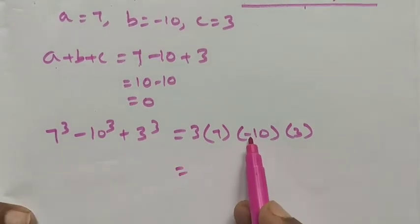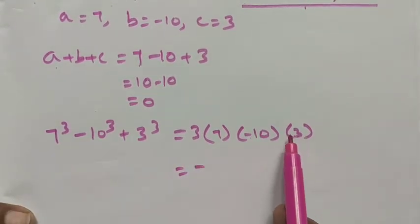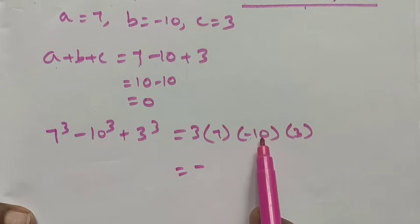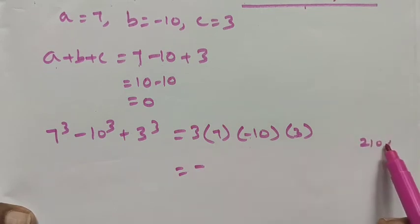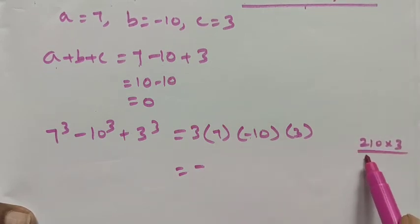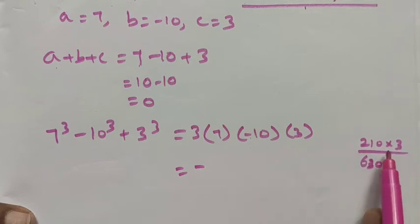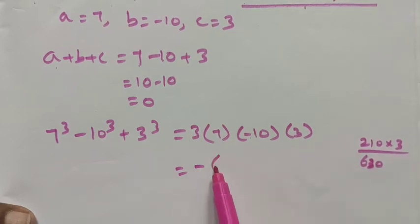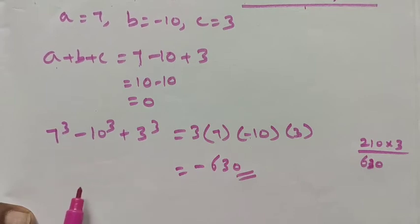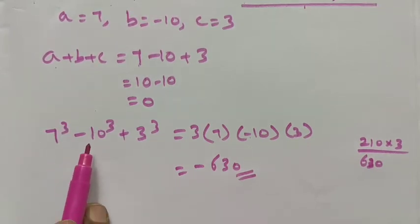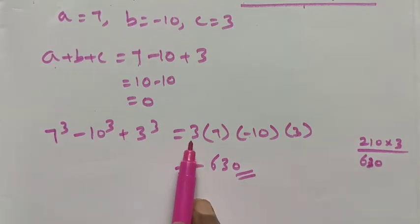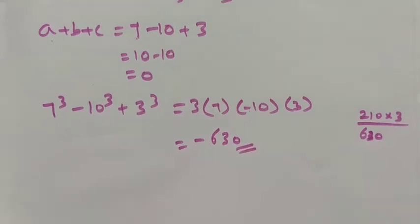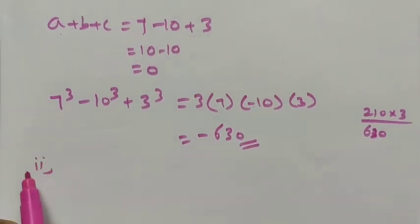Since b is negative, we put the negative symbol. 3 times 7 times 10 times 3: 3 tens are 30, 30 into 7 is 210, 210 into 3 is 630. So 7 cube minus 10 cube plus 3 cube equals minus 630. Using this identity is much easier than computing each cube individually.